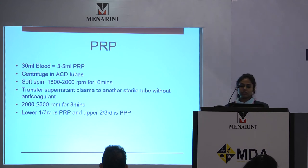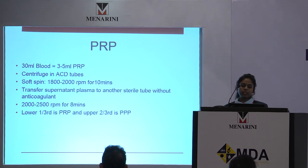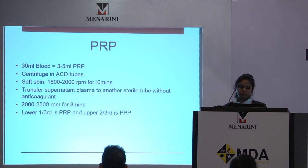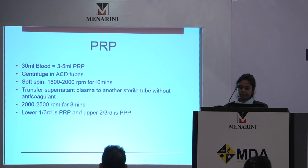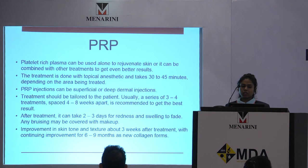PRP preparation is done in two steps. First, the blood is collected in ACD tubes and subjected to a soft spin of about 1800 to 2000 RPM for 10 minutes. Then the supernatant plasma is transferred to another sterile tube and subjected to 2000 to 2500 RPM for eight minutes. The lower one-third PRP is used for injections and the upper two-thirds can be discarded. About 30 ml of blood taken will yield about 3 to 5 ml of PRP.